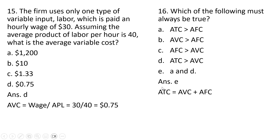A key thing to think about is this expression: average total cost equals average variable cost plus average fixed cost. So average total cost is comprised of average variable cost plus average fixed cost. Therefore, average total cost has to be bigger than average variable cost, and average total cost also has to be bigger than average fixed cost. As for whether average variable cost is greater than average fixed cost, we don't have enough information.